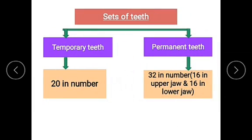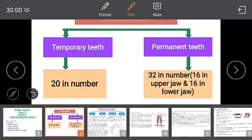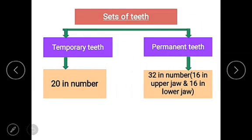Children, you all know that we eat food with the help of our mouth and we also bite and chew food with our teeth. Teeth are present in our mouth, in the upper jaw and lower jaw. Human beings have two sets of teeth: temporary teeth and permanent teeth.